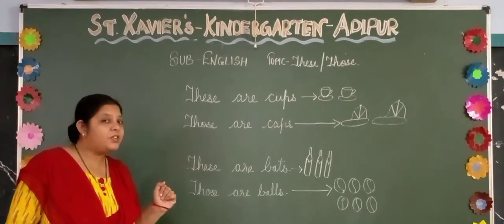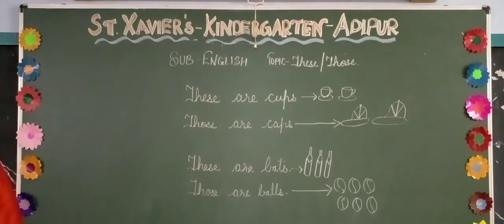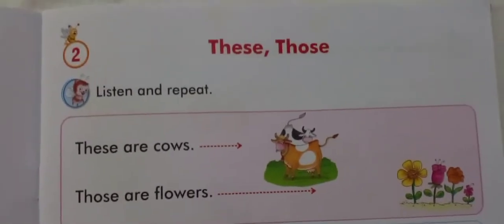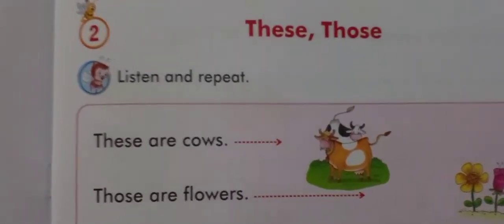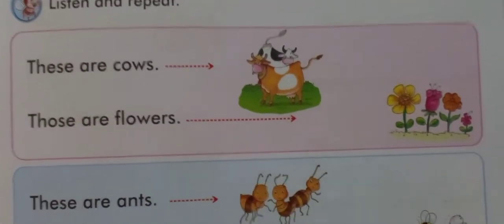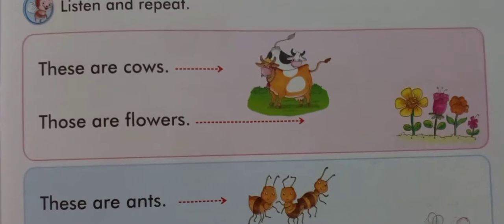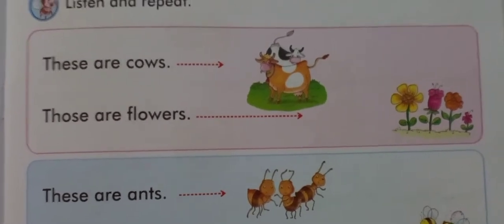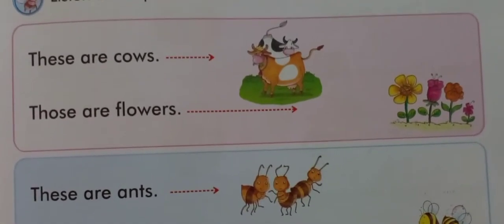Now let's see how it is in the reference book. This is your reference book — 'These or Those.' You can see there are many cows. These are cows, because the cows are near to you. And flowers — the flowers are far, so you will use 'those are flowers.'